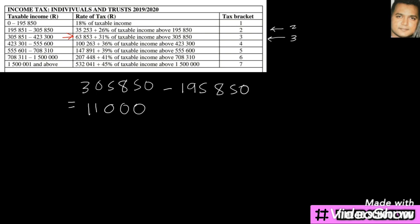We look at the previous tax bracket and see the percentage there, so we multiply by the percentage from tax bracket two, which is 26%. Once we do this, we calculate it.